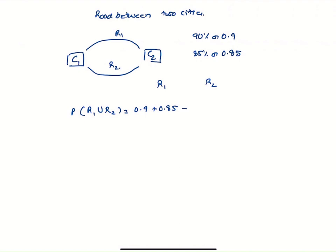So 0.9 plus 0.85 minus 0.9 times 0.8, that is 0.98.